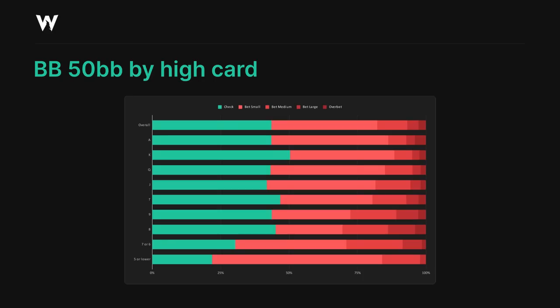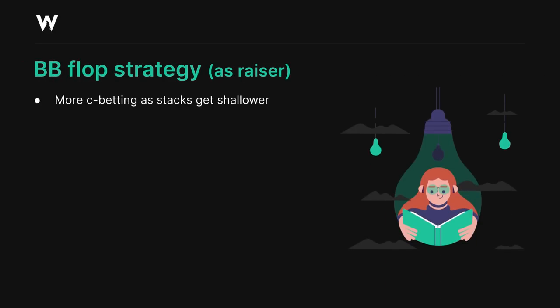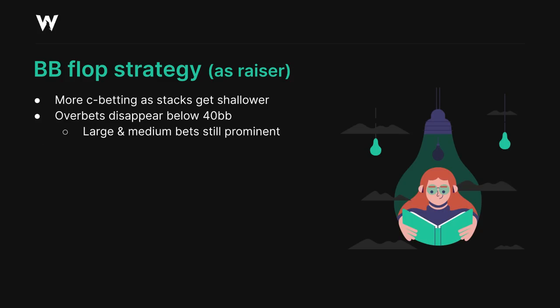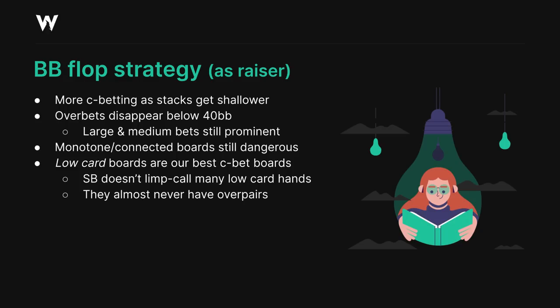The lack of overpairs hurts the small blind a fair amount here — hands like eights plus are mostly jamming or 3-betting after they limp preflop. To sum up, we see the big blind once again doing more cbetting as stacks get shallower, with primarily smaller sizings, but some big bets also appearing. The overbets disappear once they get below 40 big blinds, but the large and medium bets still happen a lot. The same monotone and connected boards are the ones to watch out for, but this time we're able to attack the low card boards a bit more aggressively, since the small blind almost never has an overpair on these boards.